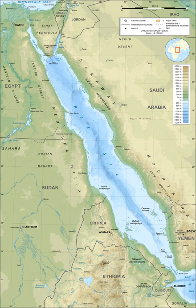In 1798, France ordered General Napoleon to invade Egypt and take control of the Red Sea. Although he failed in his mission, the engineer Jean-Baptiste Lepere, who took part in it, revitalized the plan for a canal which had been envisaged during the reign of the pharaohs. Several canals were built in ancient times from the Nile to the Red Sea along or near the line of the present Sweetwater Canal, but none lasted for long.